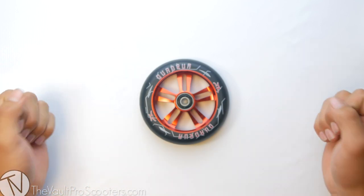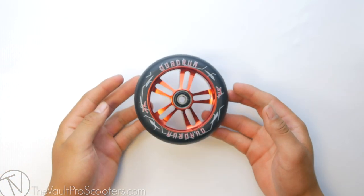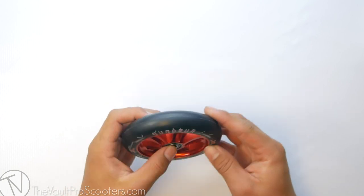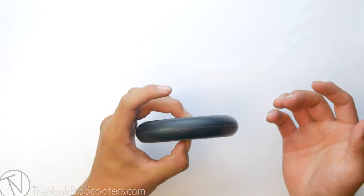What's up guys, welcome back to another product demo. Today we're going to be going over the AO Quadram wheel. This is the 110 by 24 wheel size.